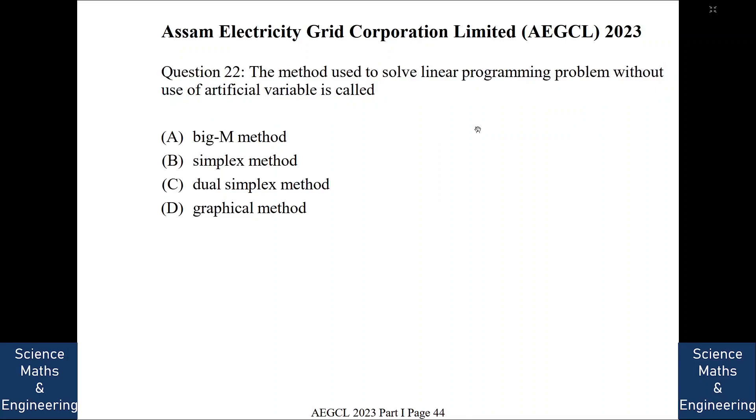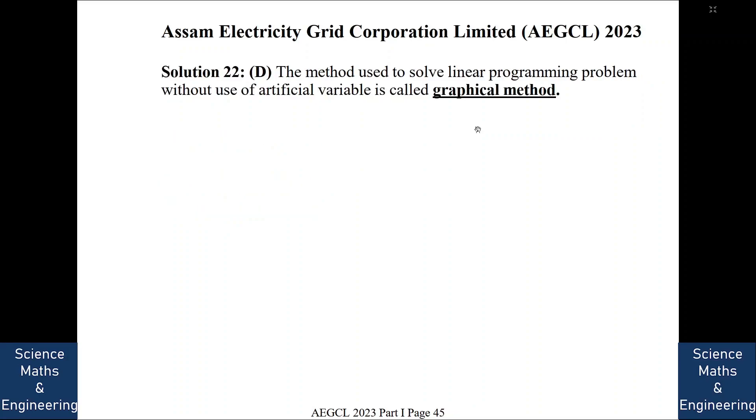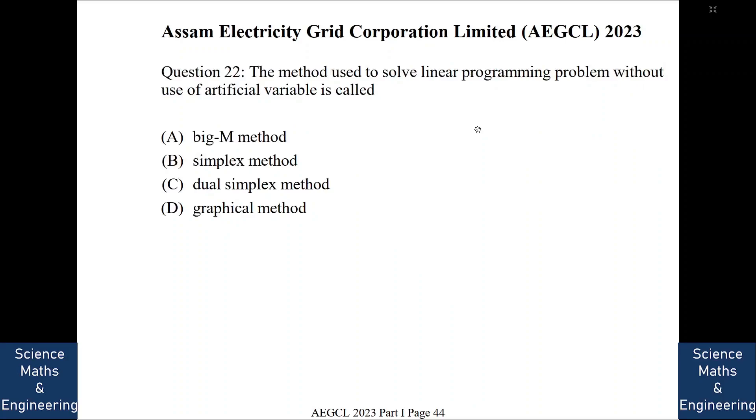The method used to solve linear programming problem without use of artificial variable is called. So in this method, which one does not have artificial variable? The answer is, it is the graphical method. If we see, Big M method uses artificial variable. Simplex method, if we are having initial infeasible solution, then also we use artificial variable. Dual simplex method also uses artificial variable.